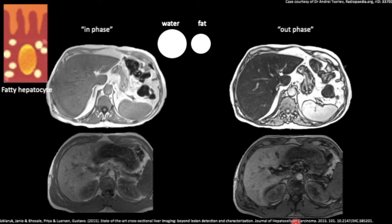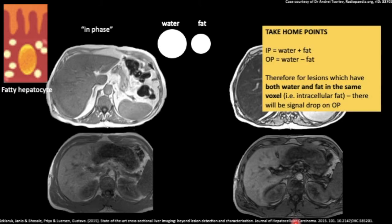Our take-home points are in-phase is water plus fat, while out-of-phase is water minus fat. For lesions with intracellular fat, such as fatty liver or adrenal adenoma, there will be signal drop on out-of-phase. To distinguish which one is the out-phase image, look for the artifactual dark signal lining the organs here. This is called the India ink artifact.